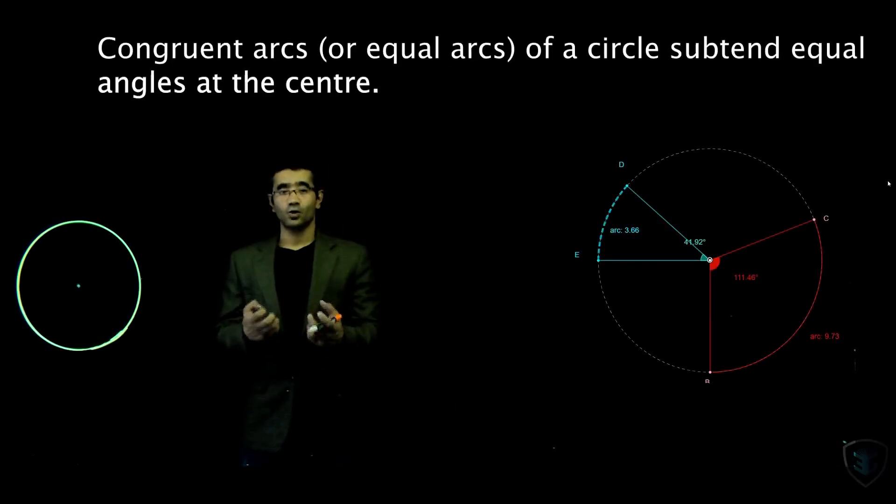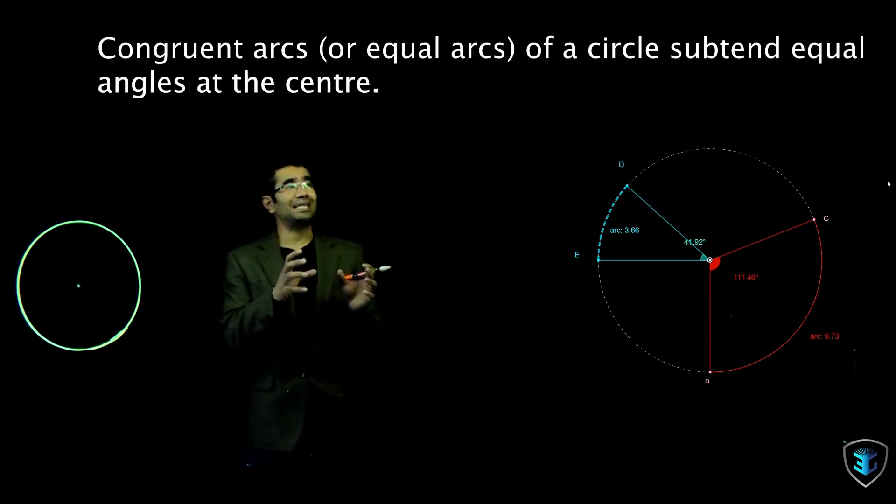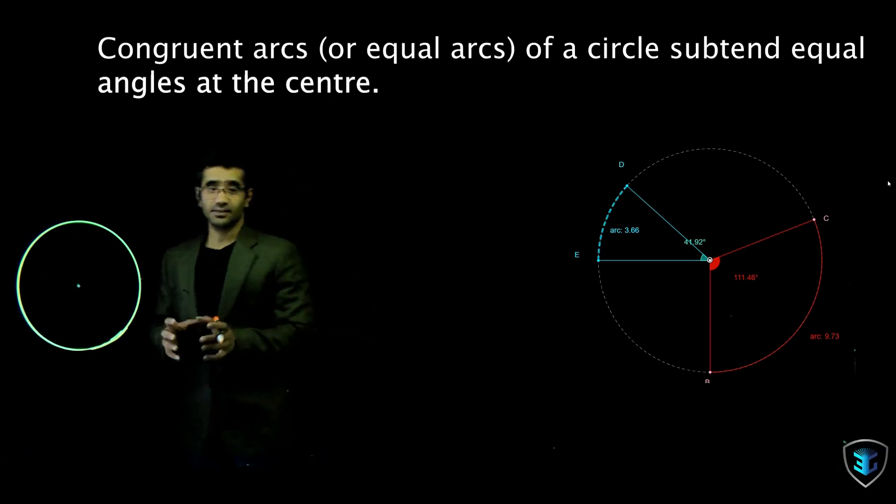Now let's go to the next fact or theorem we need to learn here. It says congruent arcs of a circle subtend equal angles at the center.